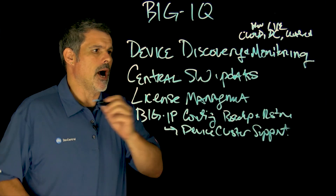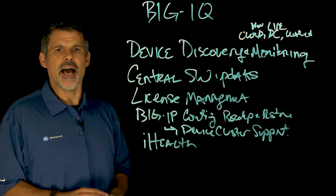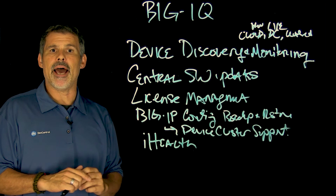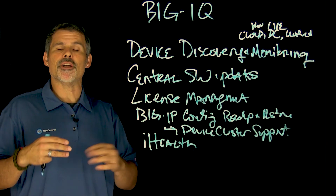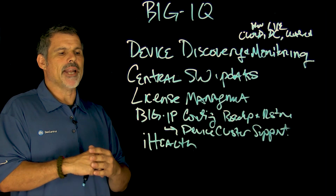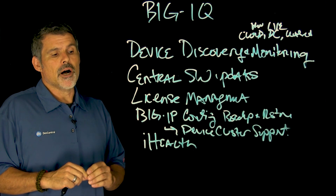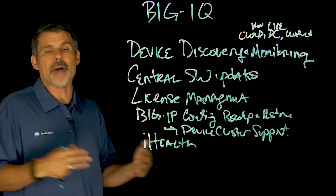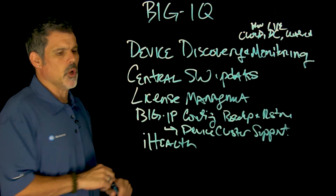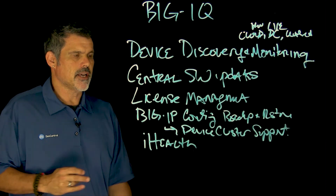You can also upload to F5 iHealth. iHealth is pretty cool — you're able to upload your config, your UCS, to iHealth. Then based on your configuration, your version number, and other things, it'll check your configuration and let you know things like if there might be a security vulnerability, or if something going on with your config might be fixed with a specific hotfix. So iHealth is really useful for getting information about your Big IP infrastructure.